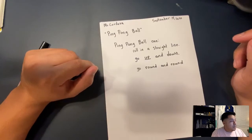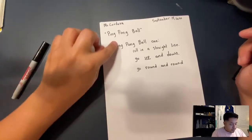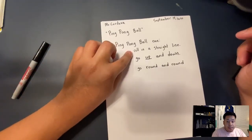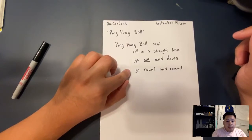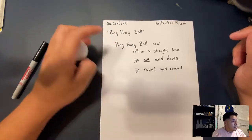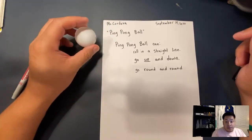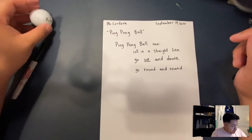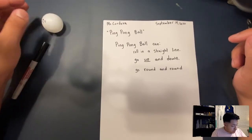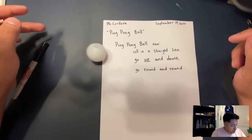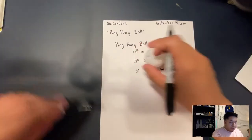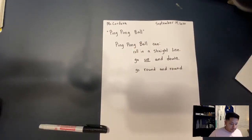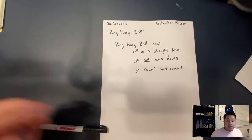Awesome job, boys and girls. So a ping pong ball can roll in a straight line, it can go up and down, it can go round and round. Can it go fast and slow? Yes, it can go fast and slow. Can it go fast? Yes, it can go fast and slow.